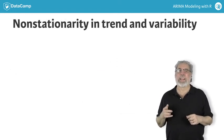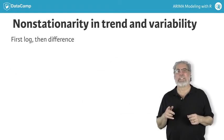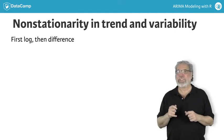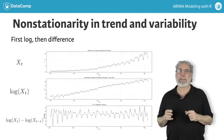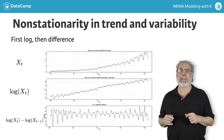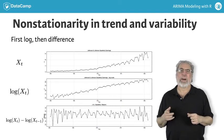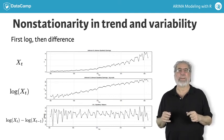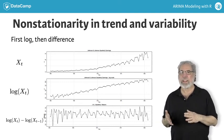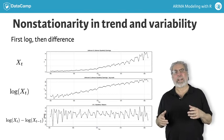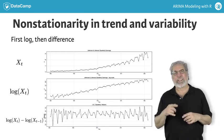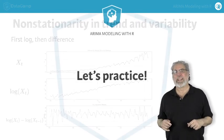Finally, if there is trend and heteroscedasticity, logging and differencing can help, as in the Johnson & Johnson earnings data set. First, logging positive value data can stabilize the variance. Second, differencing the data will detrend it. Let's look at some exercises.